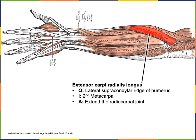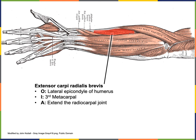Now we'll go through more detail for the major muscles, starting with extensor carpi radialis longus, which has its origin from the humerus at the lateral supracondylar ridge — the same place as the origin for brachioradialis. The insertion for extensor carpi radialis longus is the second metacarpal, and the action is to extend the radiocarpal joint. Extensor carpi radialis brevis has its origin from the lateral epicondyle of the humerus and its insertion onto the third metacarpal, also performing extension at the radiocarpal joint.